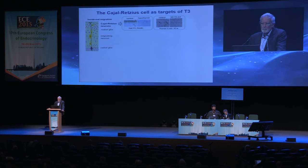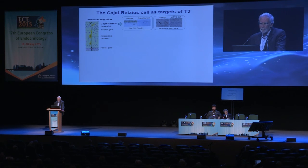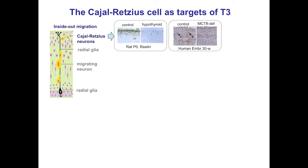Finally, the Cajal-Retzius cells, which are targets of T3. These are Cajal-Retzius cells in layer 1 of the cerebral cortex expressing the protein reelin. This shows the difference between the control and hypothyroid rats, and similarly in the human embryo, between the control and the MCT8-deficient patient where there are no Cajal-Retzius cells.